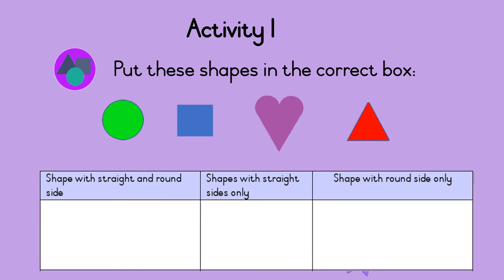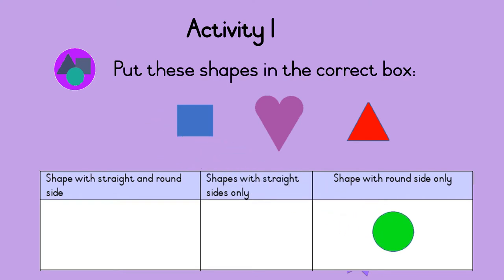Let's start with the circle. Look at the circle. It has one round side. So the circle goes in the last box. It is a shape with round sides only.